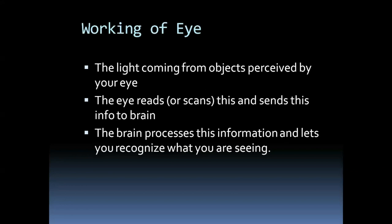You are not placing your eye on the plant to understand what it is — you stay away from the plant and are still able to identify it. You are staying at a remote position and identifying the object, so you are using remote sensing. This is how your eye works.